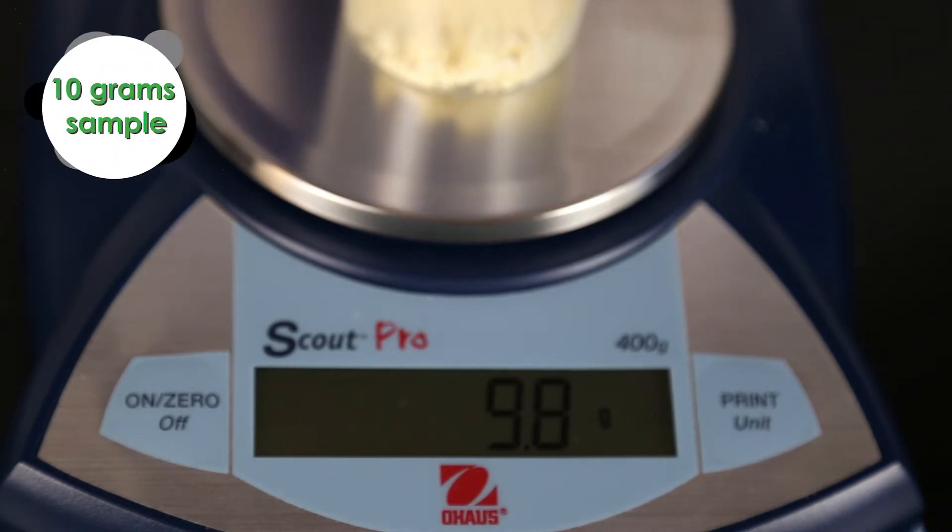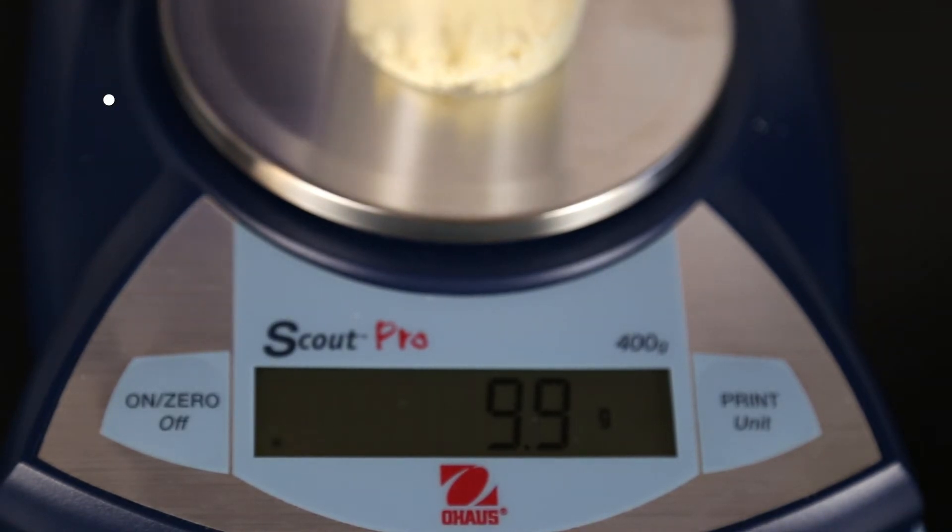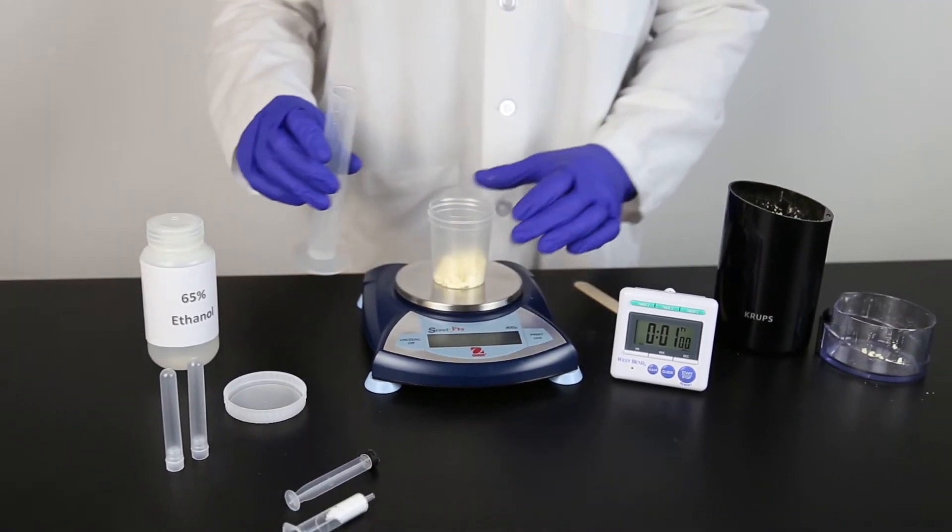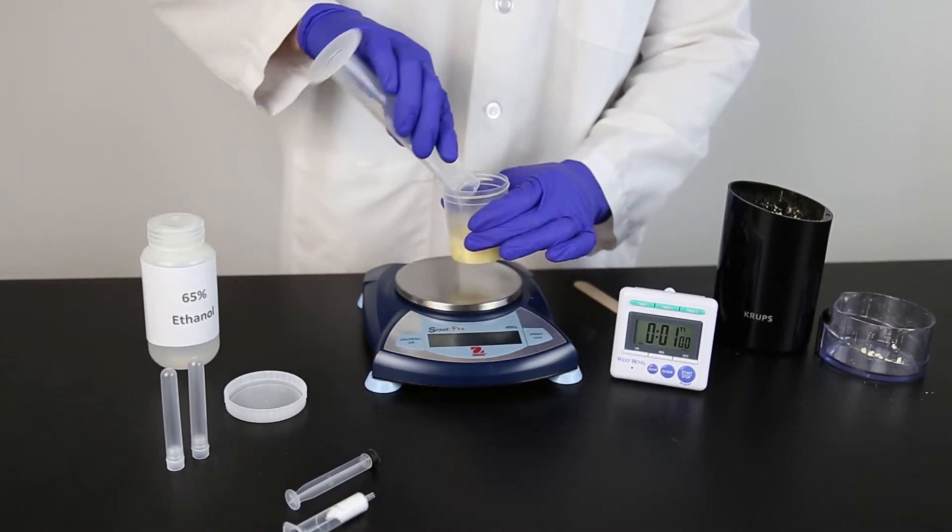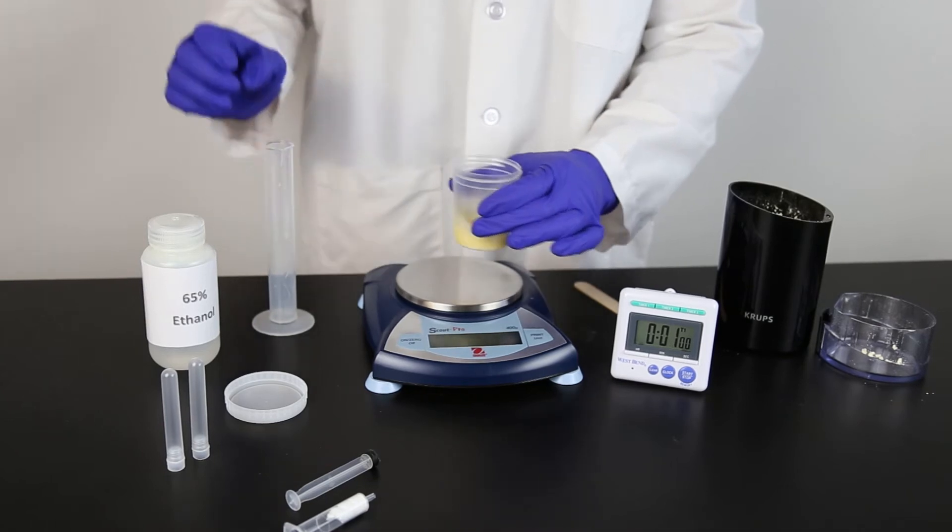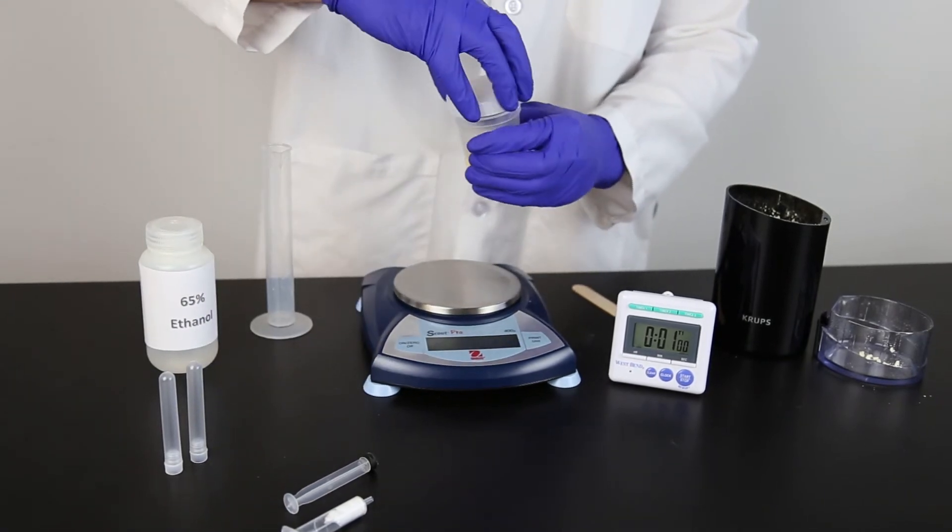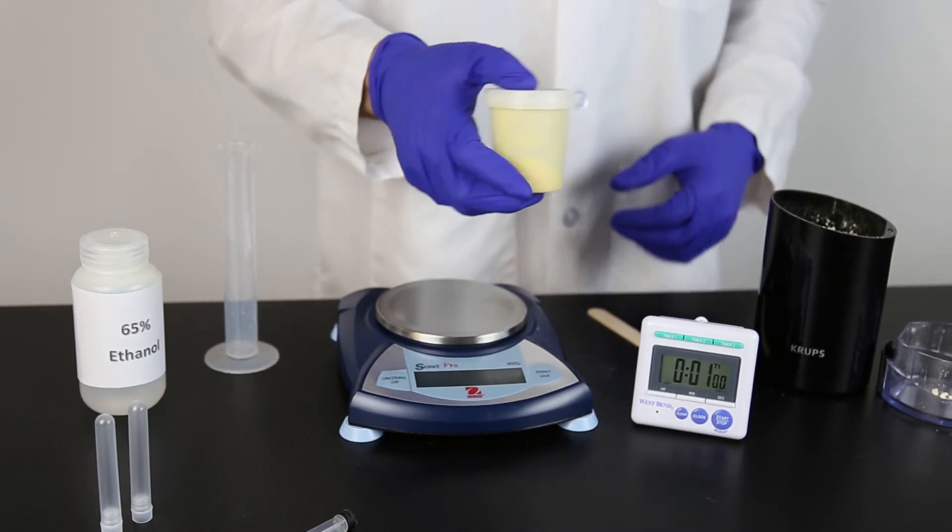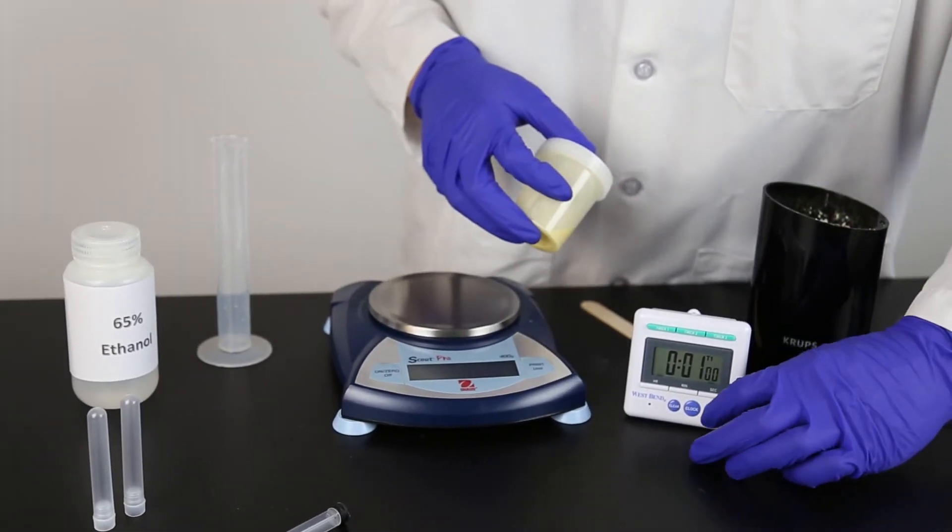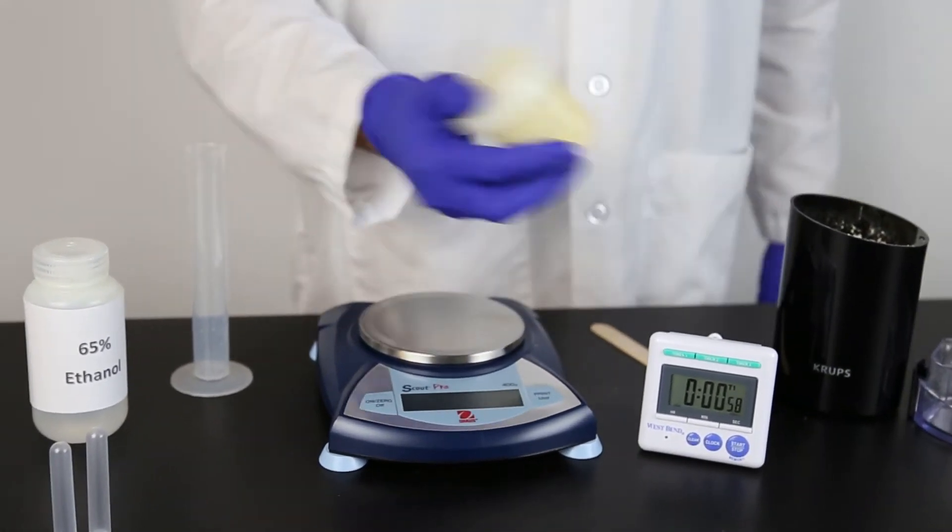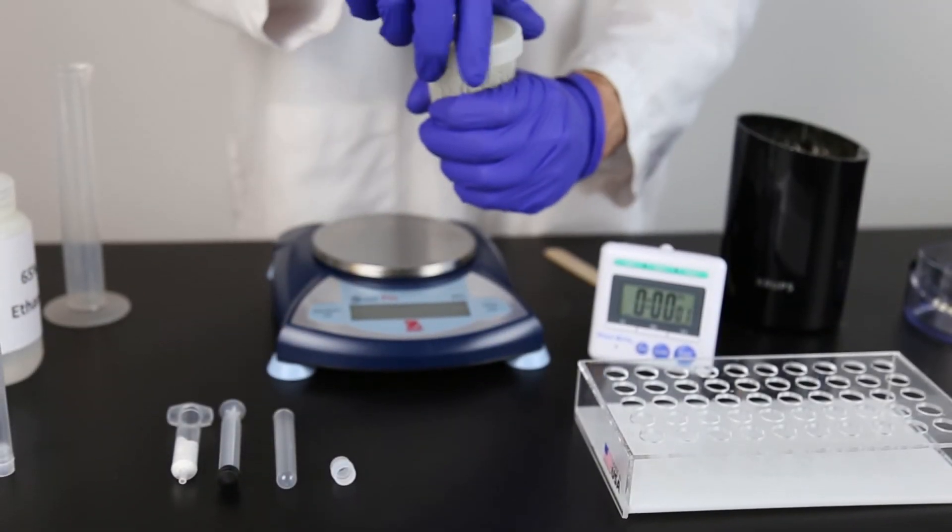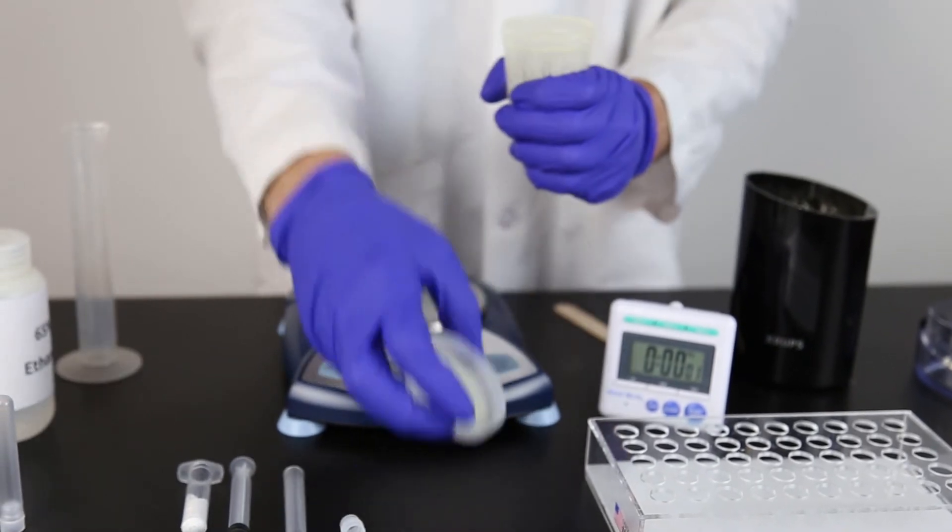Combine 10 grams of ground sample with 20 milliliters of 65% ethanol. Vigorously shake using hand or mechanical means for one minute. Allow sample to settle and filter with a filter syringe or Whatman No. 4 filter paper.